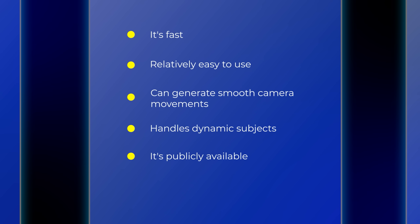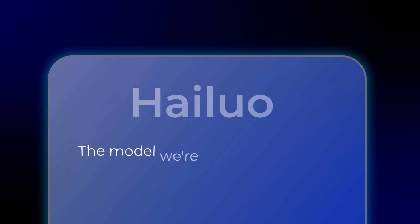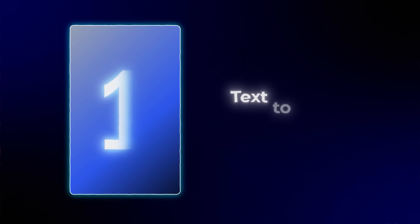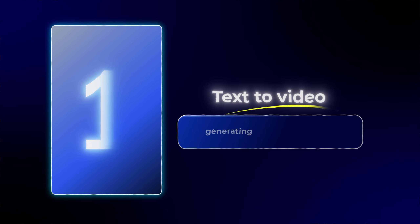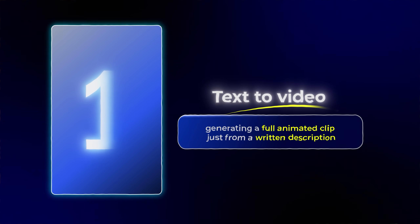Kling is publicly available and gaining popularity quickly. And of course, we have Hilo 2, the model we're focusing on today. For the first part of the comparison, we're going to focus on text-to-video. Text-to-video means generating a full animated clip just from a written description. All three models support this, so it's the perfect place to start.